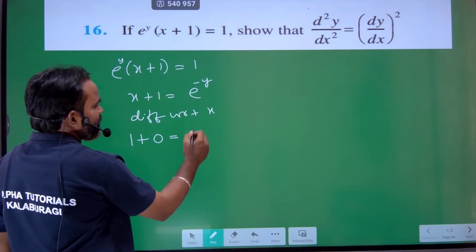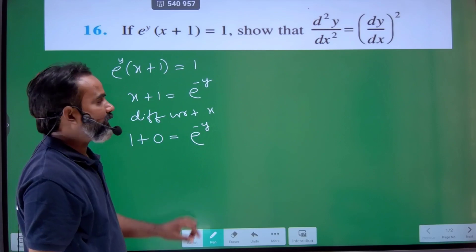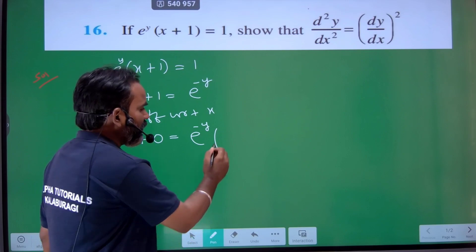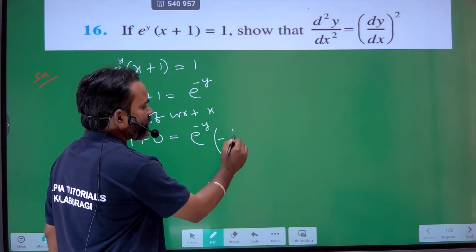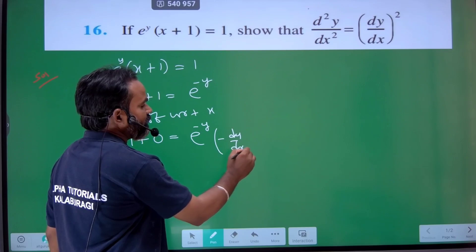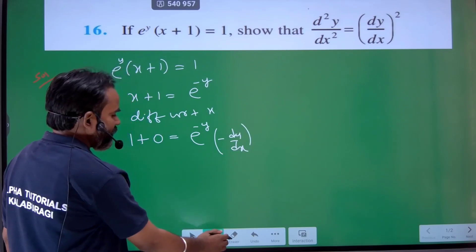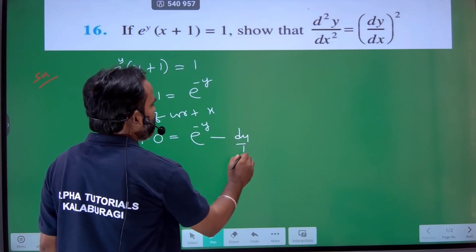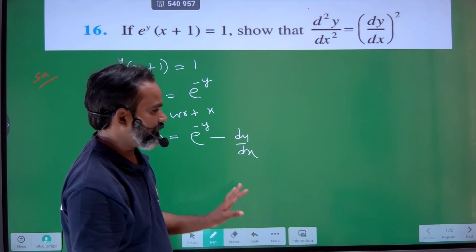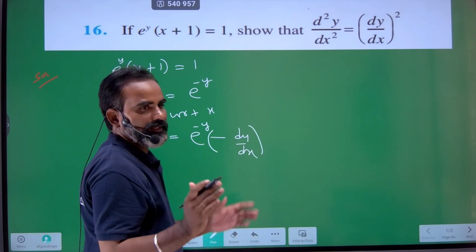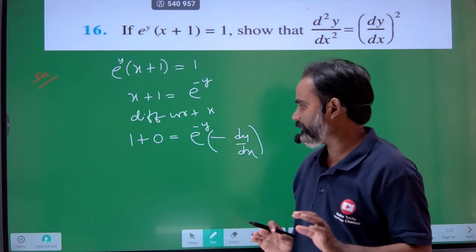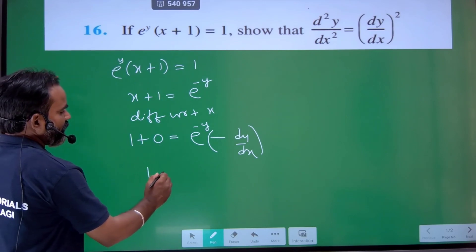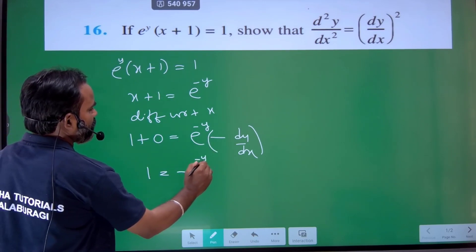Writing this out: e to the power of minus y times the derivative... using the chain rule for differentiation.